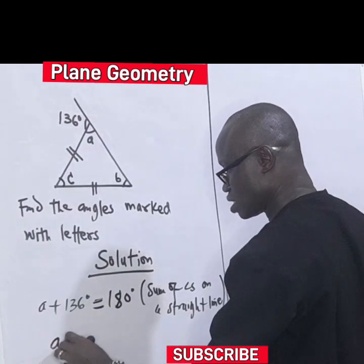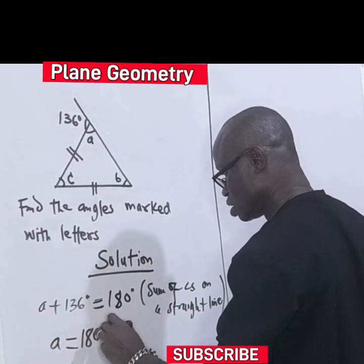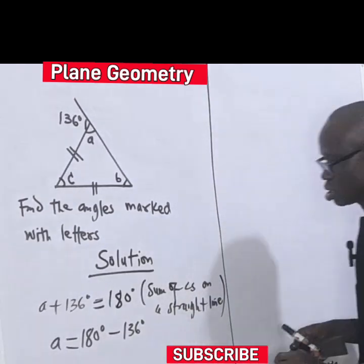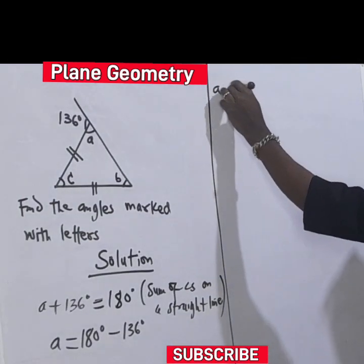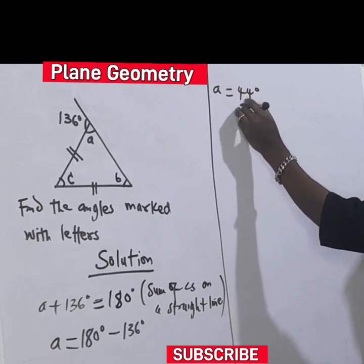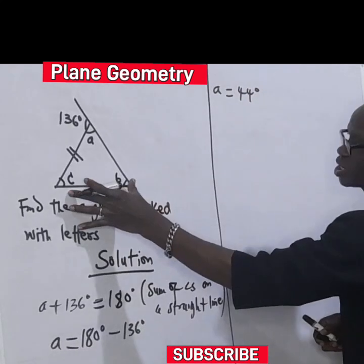Then we have it as A equal to 180 degrees. Let's transpose. Then A will give us 44 degrees.